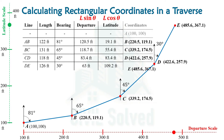We have now got the coordinates of all points. Looking at the red and green dots on the departure and latitude scale, we can see that their motion will solely depend on the direction of movement. If we are moving towards east, the departure will move rightward. If we are moving upward, the latitude will be positive, and if moving downward it will become negative. This is how we can calculate the coordinates of respective points in an open traverse when given the length and bearing of each line.